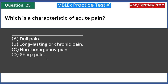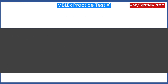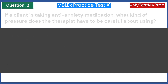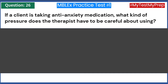Which is a characteristic of acute pain? A) Dull pain. B) Long lasting or chronic pain. C) Non-emergency pain. D) Sharp pain. Answer: D — sharp pain.